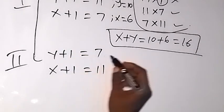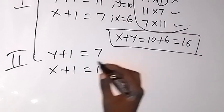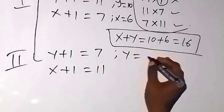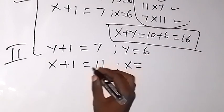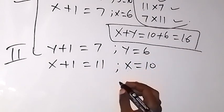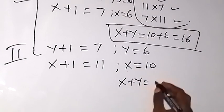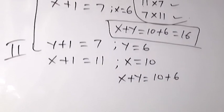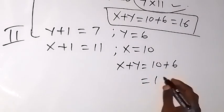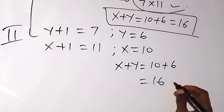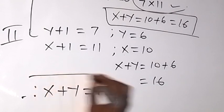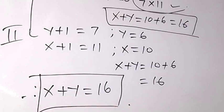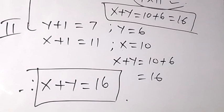For Case 2: y plus 1 equals 7 gives y equals 6, and x plus 1 equals 11 gives x equals 10. So x plus y equals 10 plus 6, which is also 16. For both cases, the value of x plus y is 16. Thank you for joining us — don't forget to subscribe for more videos, see you in the next class.